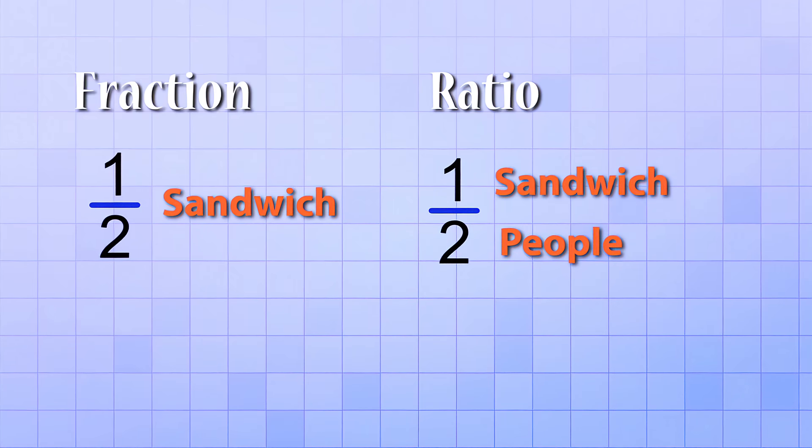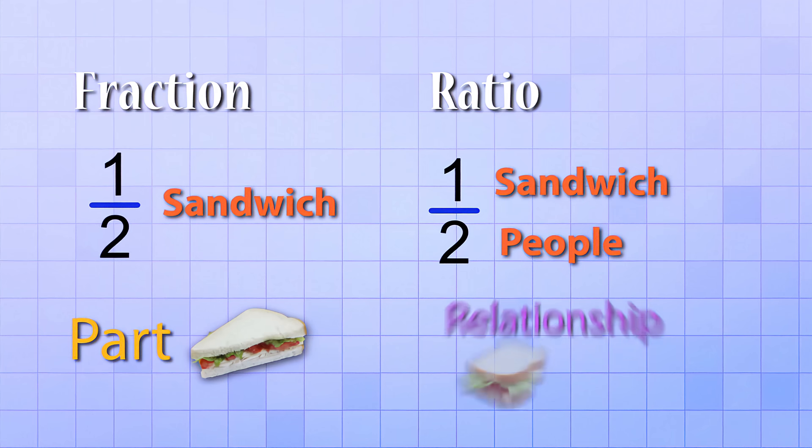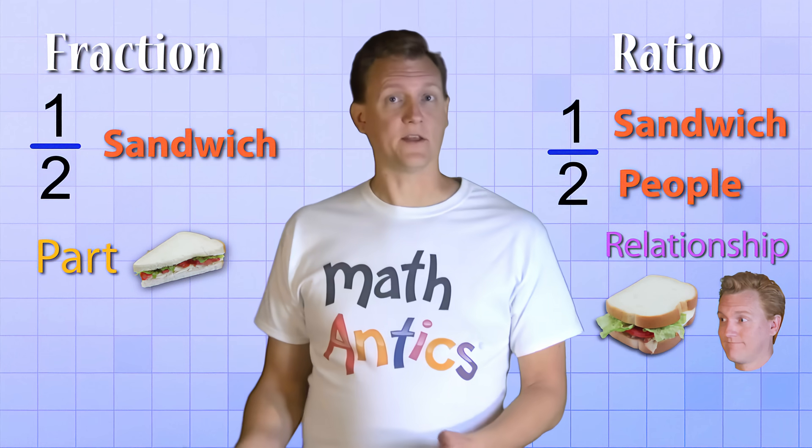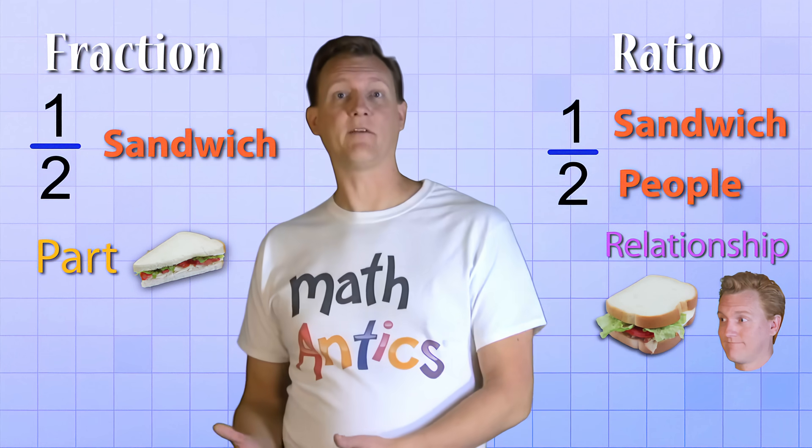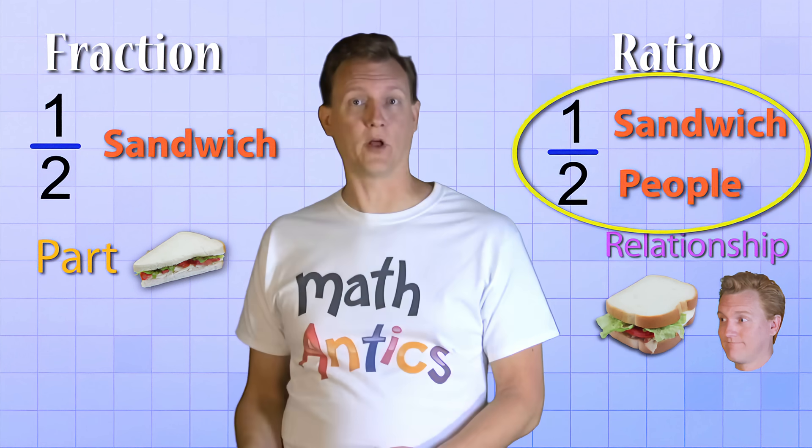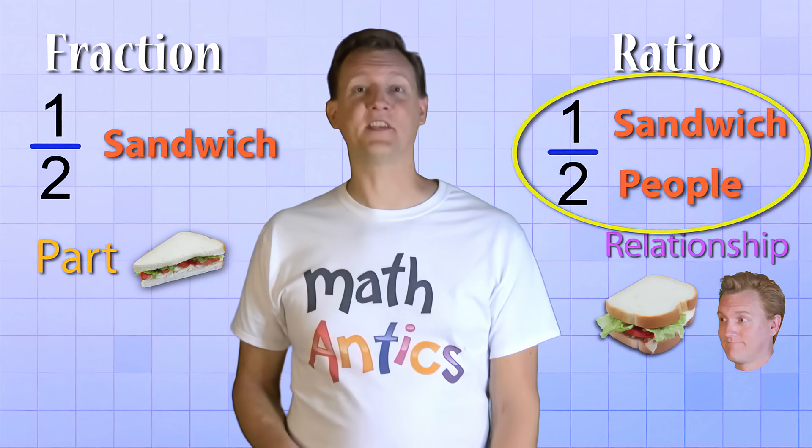Do you see the difference between our fraction and our ratio? The math part of each of them is the same. But with the fraction, both the top and bottom numbers are referring to the same thing, the sandwich. However, with the ratio, the top and bottom numbers are referring to different things, sandwiches and people. The fraction shows a part of something, but the ratio shows a relationship or a comparison between two different things. And you can see they're the same thing mathematically, because if you did have the ratio of 1 sandwich per every 2 people on a picnic, guess how much of a sandwich each person would get? Yep, half a sandwich.